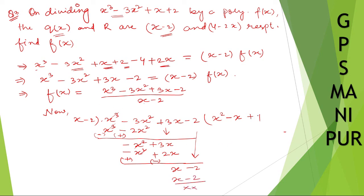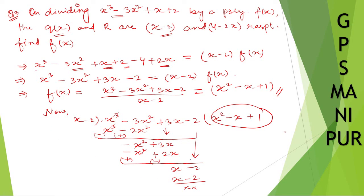After dividing, we get f(x) equal to x squared minus x plus 1. This is your f(x). Therefore, f(x) is equal to x squared minus x plus 1. Okay, that's all — thank you so much, we will meet in the next video.